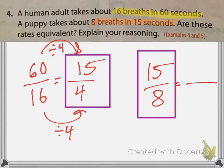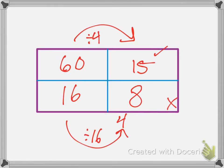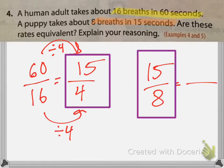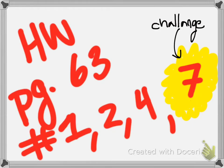There are three ways to solve these: simplifying fractions, ratio tables, or butterfly math. The great part about math is there are so many different ways to do things. Your homework is page 63, problems number 1, 2, and 4. If you want a challenge, do number 7. I suggest you do all of them to get the practice needed.